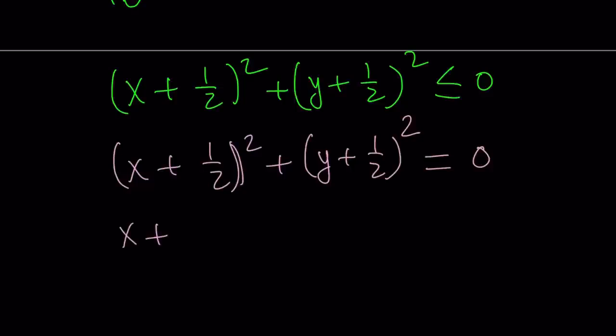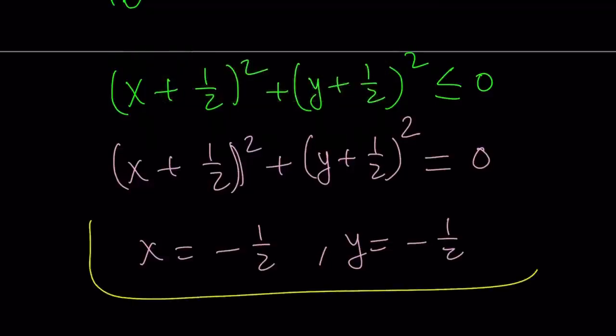x plus 1 half is 0, which means x equals negative 1 half, and y equals negative 1 half. And this brings us to the end of this video.